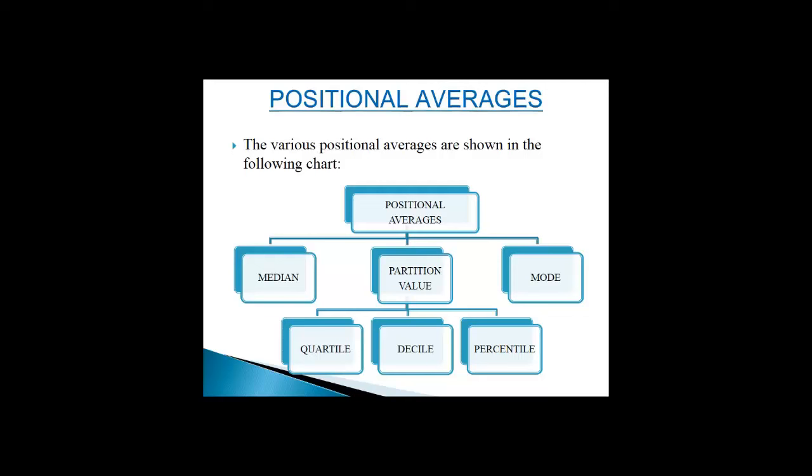As you can see, positional averages are of three kinds: median, partition value, and mode. Partition value is further divided into three segments: quartile, decile, and percentile. However, the present chapter focuses only on median and mode in accordance with the CBSE syllabus. A brief reference of quartiles is also given, as its knowledge is important to understand the concept of quartile deviation.